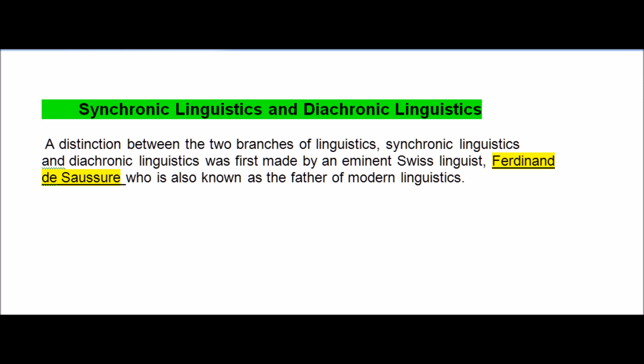The distinction between the two branches of linguistics — synchronic linguistics and diachronic linguistics — was first made by the eminent Swiss linguist Ferdinand de Saussure, who is known as the father of modern linguistics.